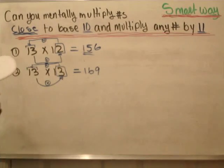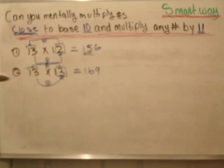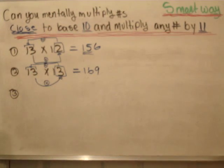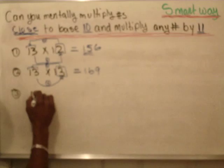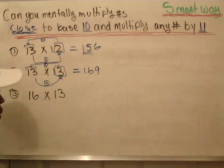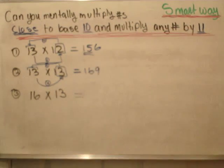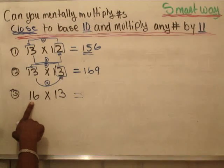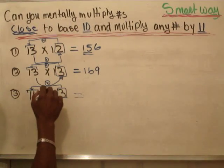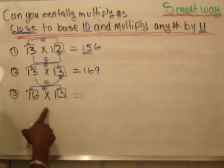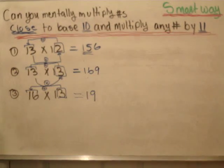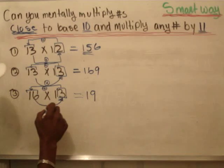Now let's do something a little bit different — now you're going to have to carry one over. That's just slightly different from the first two. If we have 16 times 13, when we add 3 onto 16, it's going to give us 19. And then we're going to multiply the last two, which is going to give us 18.